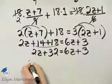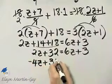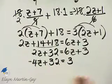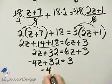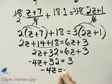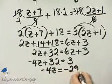If I subtract 6z from both sides, I have negative 4z plus 32 is equal to 3. And then if I subtract 32 from both sides, I have negative 4z is equal to 3 minus 32 and that is negative 29.